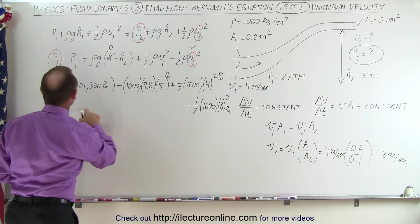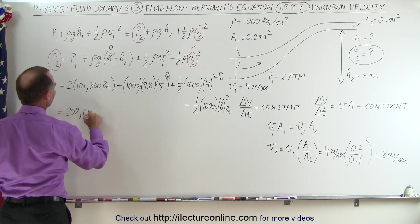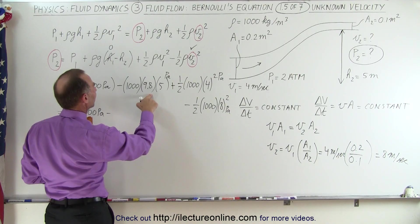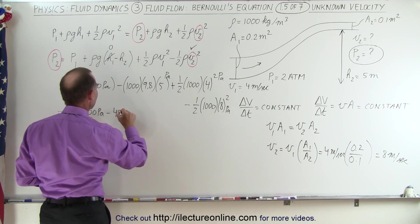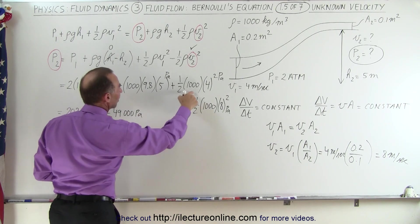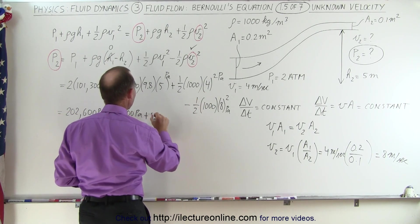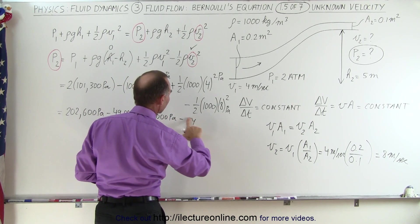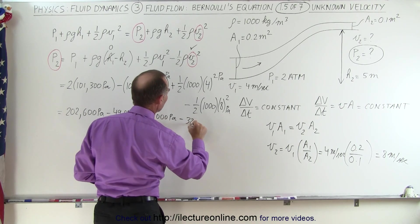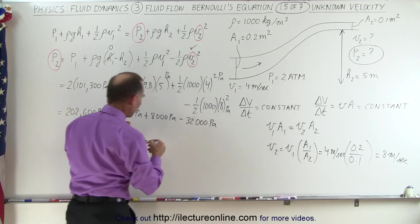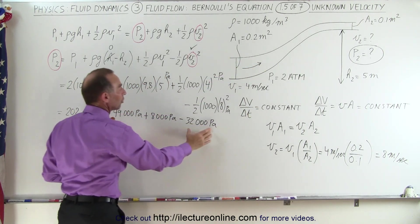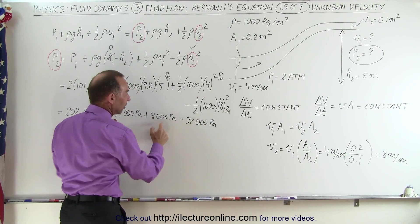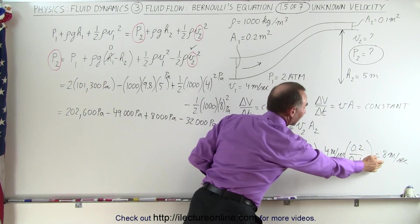So this would be 202,600 pascals for pressure at 0.1, minus, so here we have 9,800 times minus 5 is 49,000 pascals, this would be 16 divided by 2, that would be plus 8,000 pascals, and that would be minus 64 divided by 2, or 32,000 pascals. So notice the velocity doubled, which means the term involving the change in pressure due to velocity, this is four times as large as this in absolute value because the velocity is twice as much.